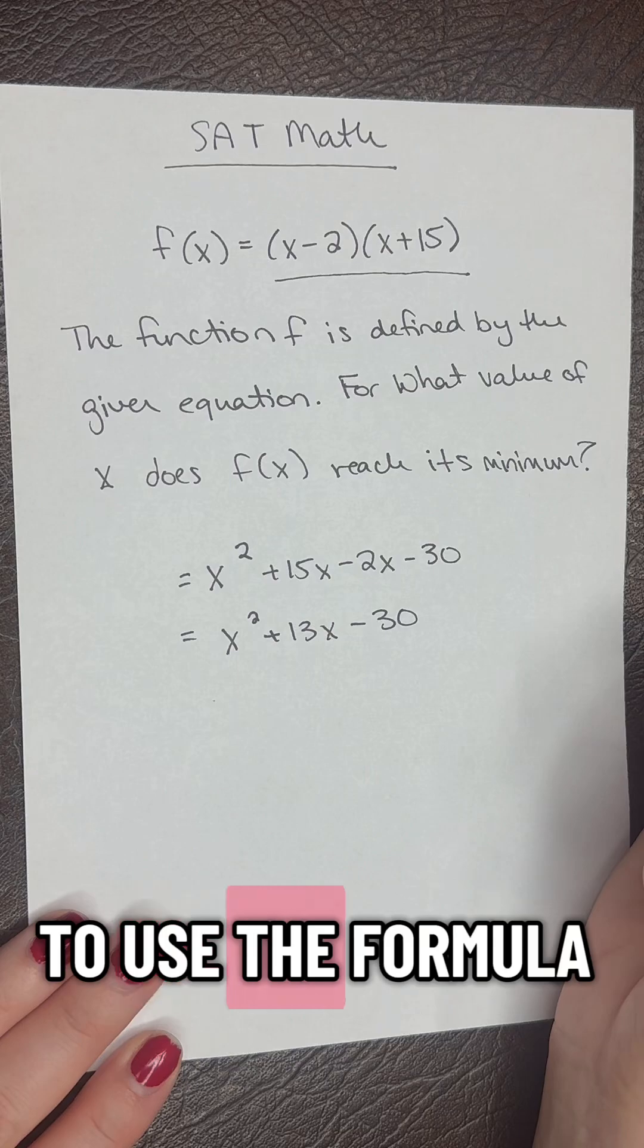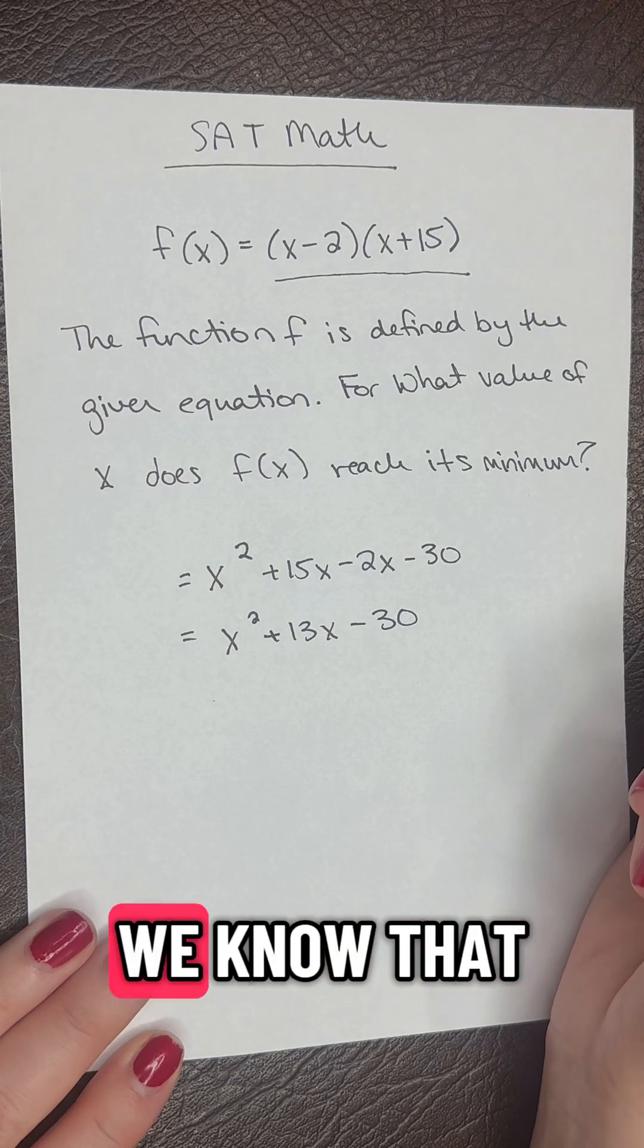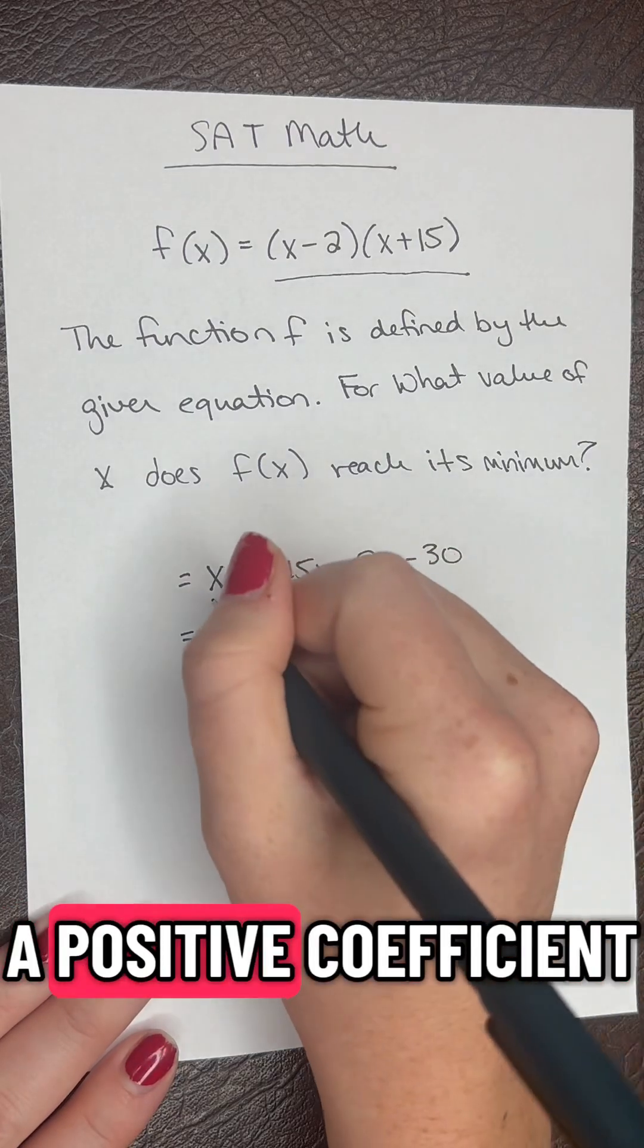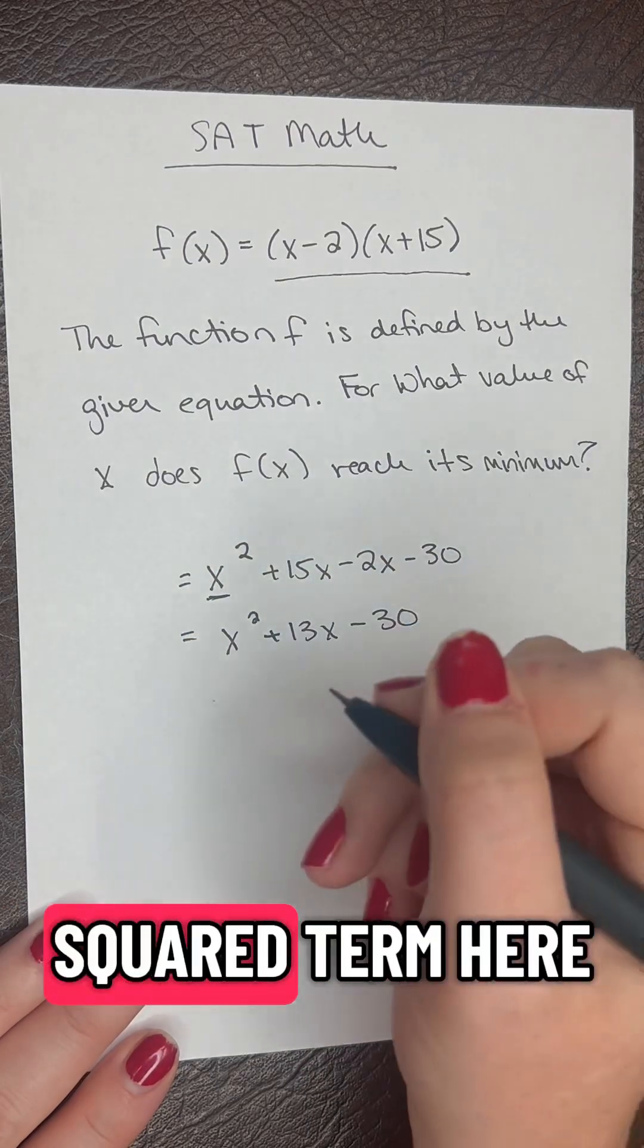Now we need to use the formula for the vertex. We know this is going to be a parabola opening upwards because we have a positive coefficient on our x squared term.